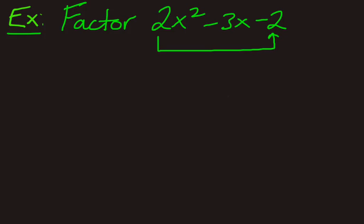So 2 times negative 2 is negative 4, so we're looking for 2 numbers that multiply to get us negative 4, and add to get us the middle term negative 3. So we're looking for what 2 numbers do that. So multiply to get negative 4, add to get negative 3. So it looks like the numbers are negative 4 and 1. So negative 4 plus 1, negative 3, negative 4 times 1, negative 4.